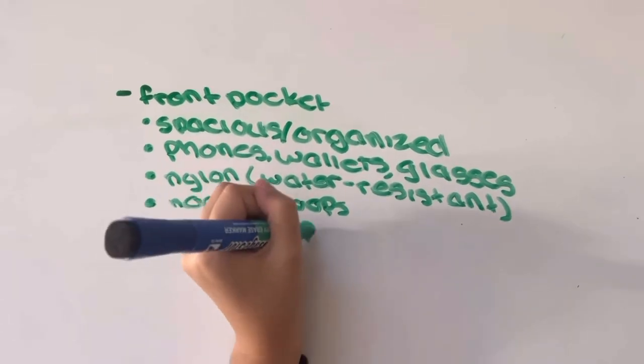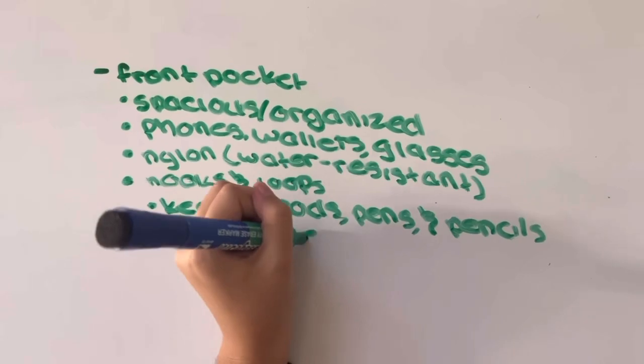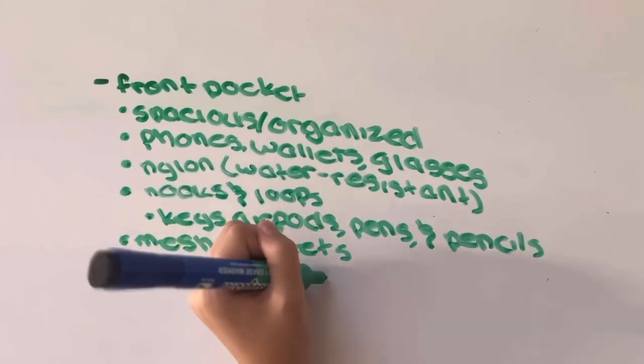The front pocket will also have hooks inside for your keys and airpods and loops for your pens and pencils. Lastly, the CPP will have mesh pockets on both sides.